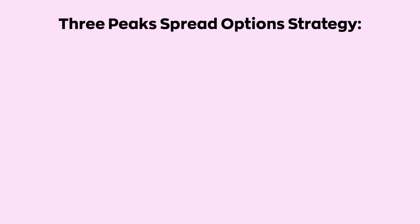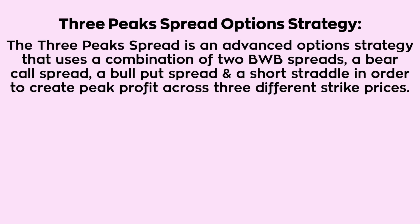The three-peak spread option strategy has been constructed by Veer Anja, a noted Punjabi singer and also an active member of our Discuss Nifty Telegram chat group, while he was experimenting with the Batman trade using broken wing butterflies. Now let's get to the strategy.